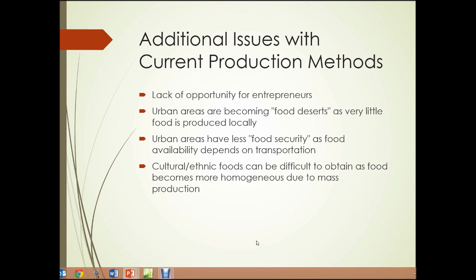Urban areas also have less food security, as food availability depends on the transportation system. Disrupt the transportation system and food stops coming in. In an average urban grocery store, there's enough food to feed the population that depends on that store for only a few days, and those stores are constantly re-supplied. It's difficult to have food security when you're as dependent on a transportation system as urban areas are. Finally, cultural and ethnic foods can be difficult to obtain as food becomes more homogenous due to mass production.